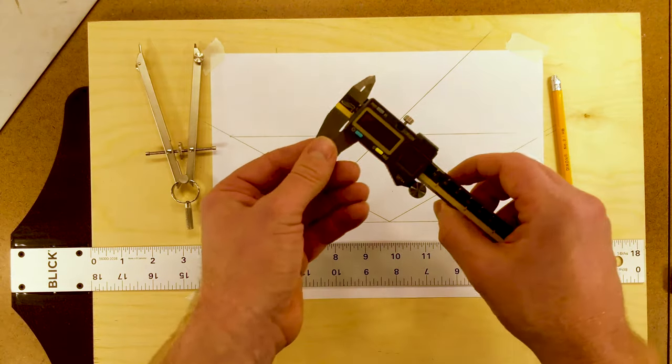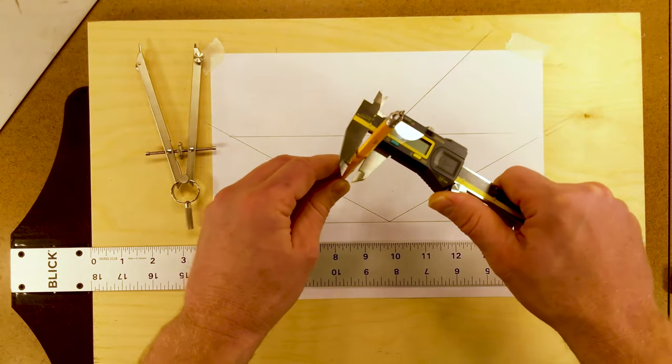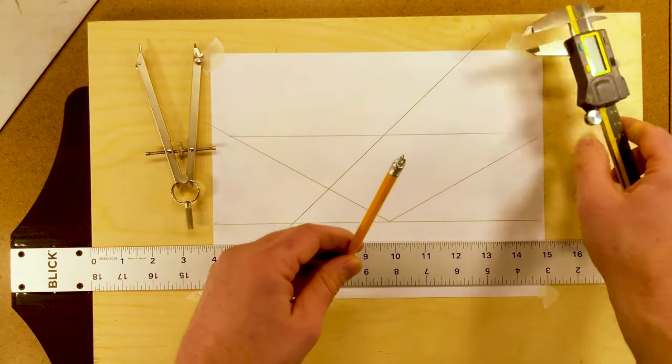Another great tool to have is a digital caliper. This is great for measuring things. If I want to know the diameter of my pencil I can find that out very quickly with a digital caliper.